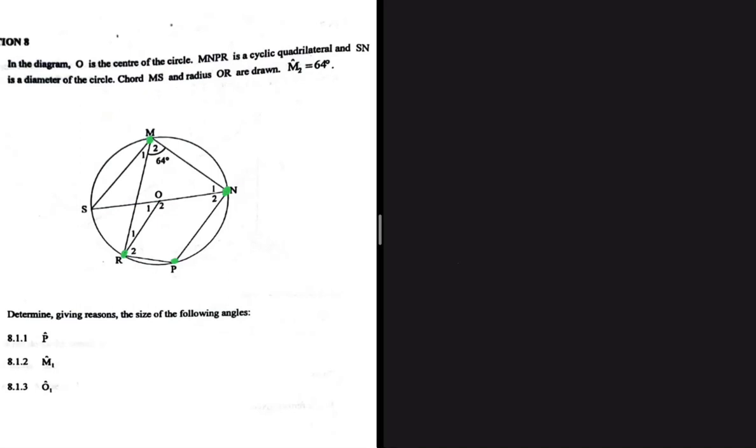We have SN as the diameter there, and then we have called MS and radius OR. So let's jot down our keywords. We know that we can use the properties of a cyclic quad.